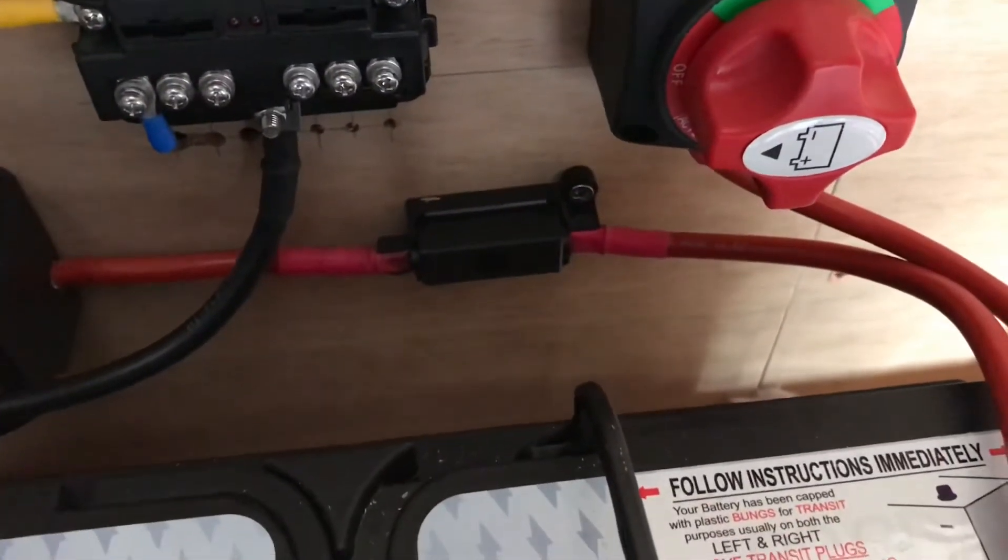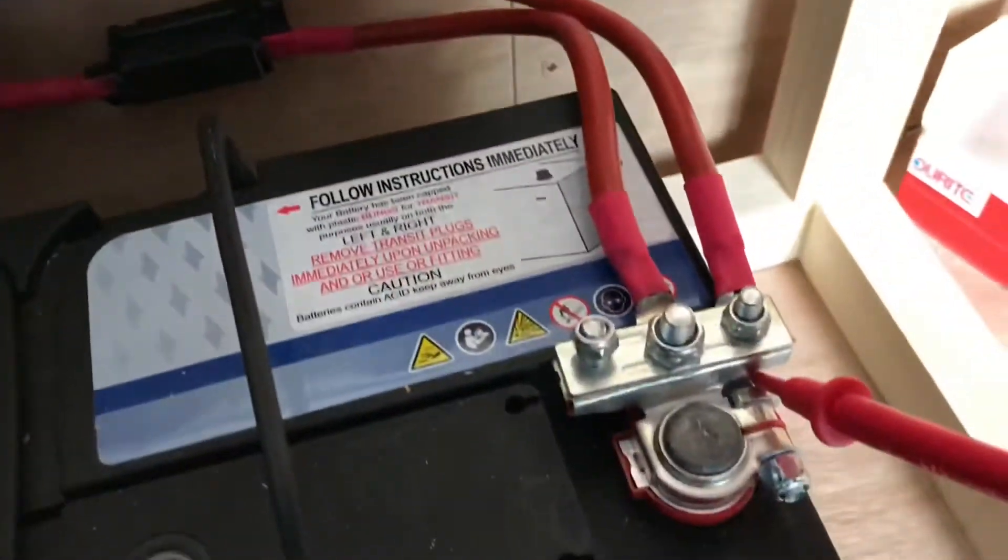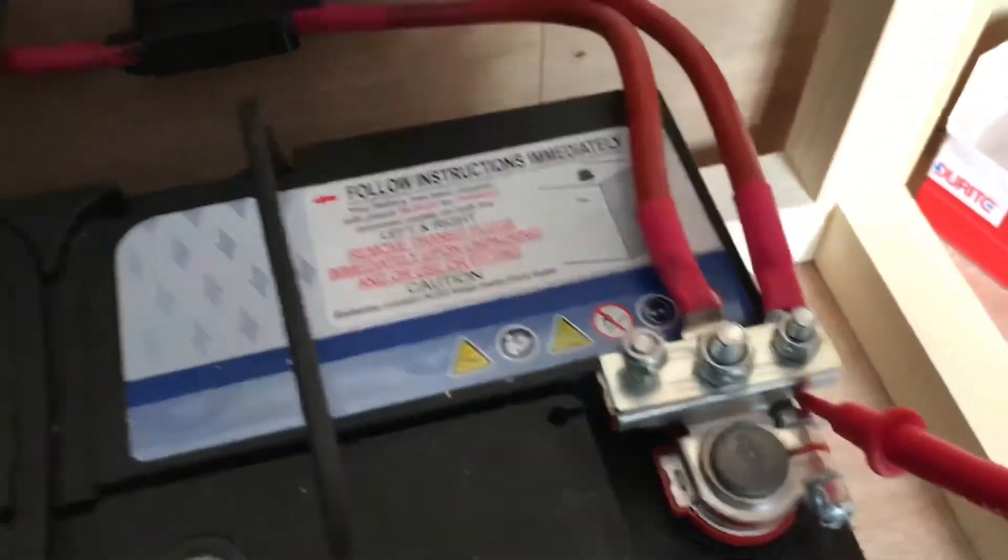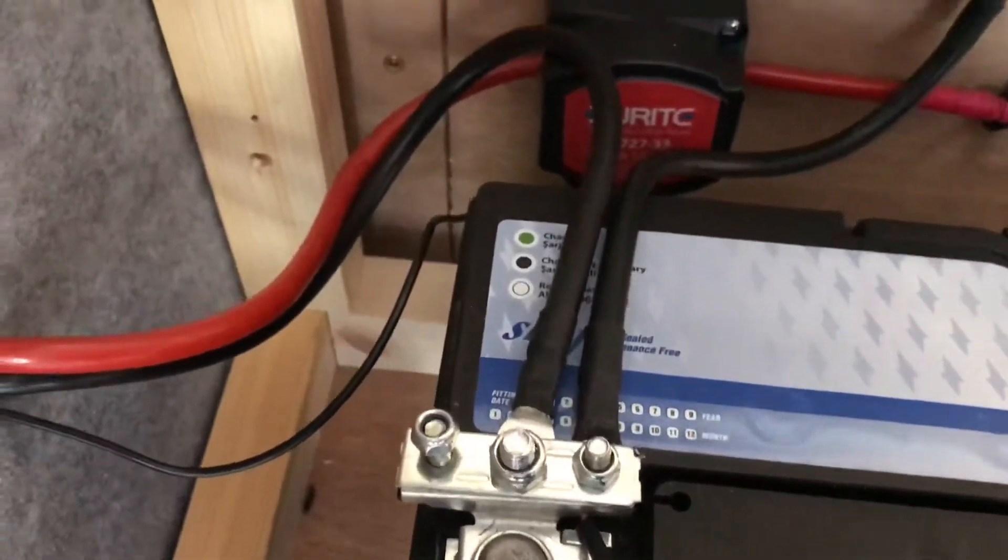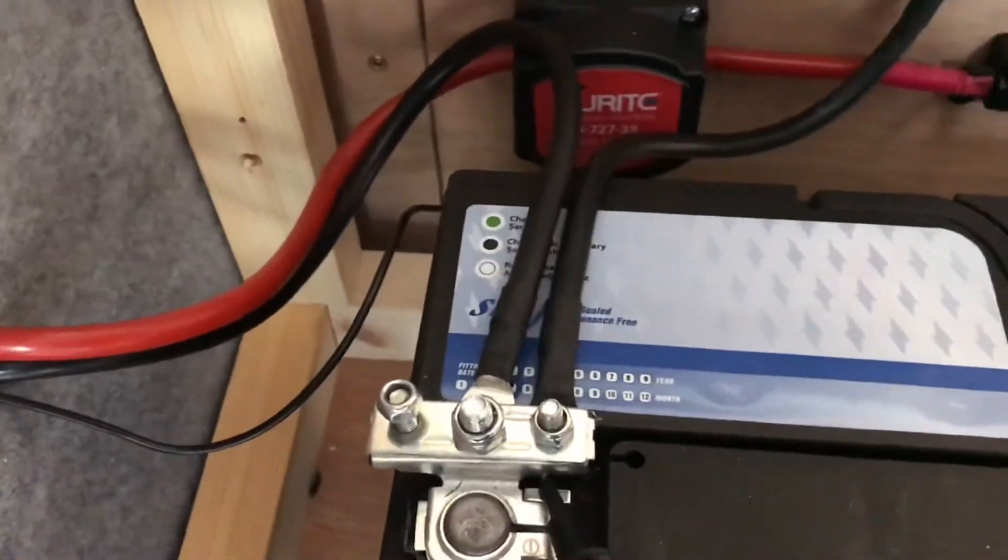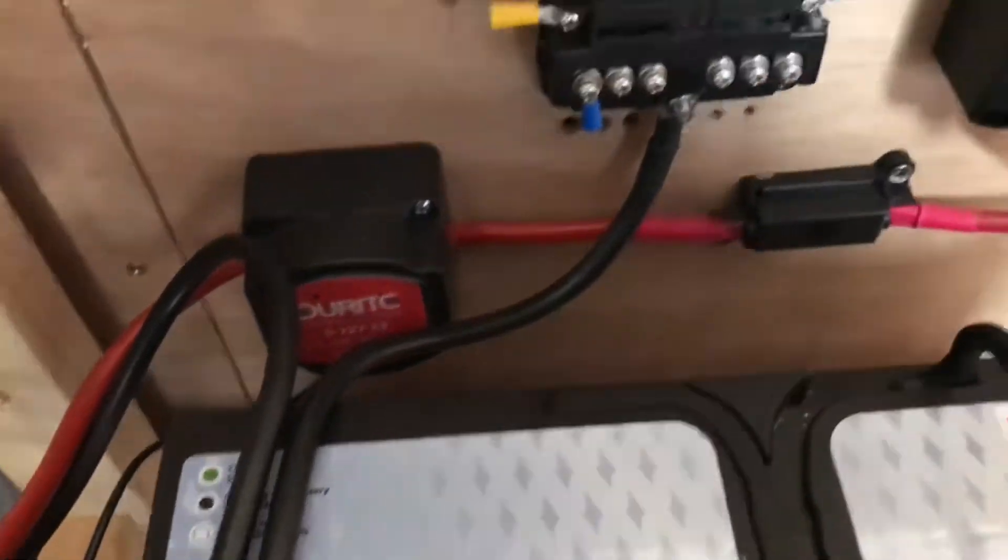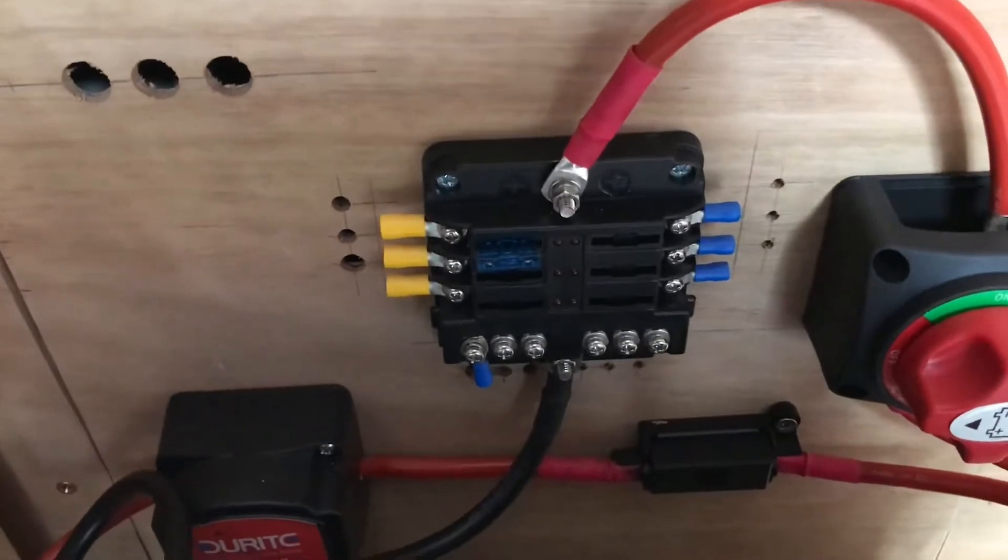That goes into a fuse. These are all 100 amp, just came in a kit. Onto your battery. Your earth goes onto the chassis. I've got an earth going onto my fuse board, kind of a bus bar thing.